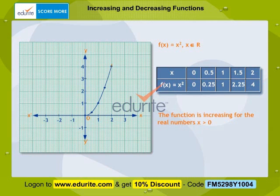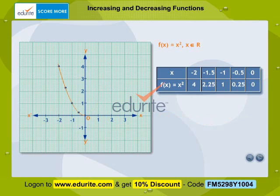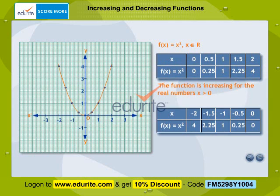As the value of x increases, the value of y decreases. The height of the graph continuously decreases. The function is decreasing for the real numbers x less than zero. To summarize: the function is increasing for x greater than zero, and the function is decreasing for x less than zero.